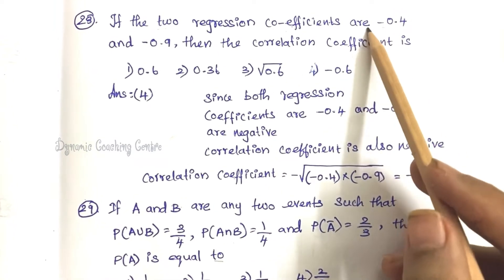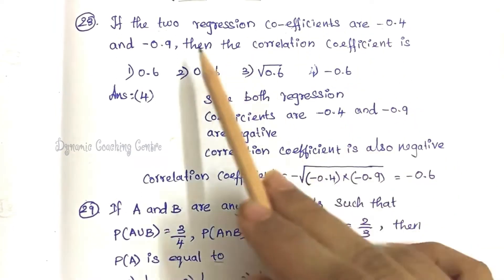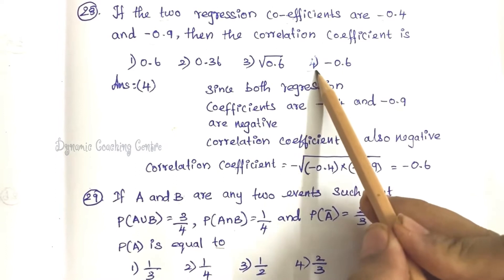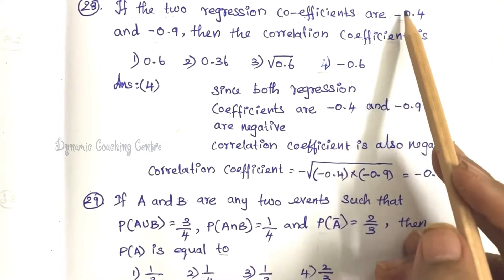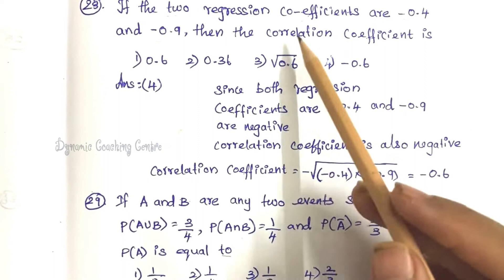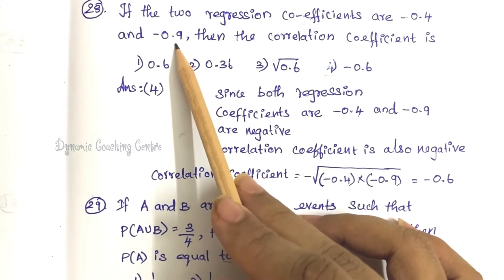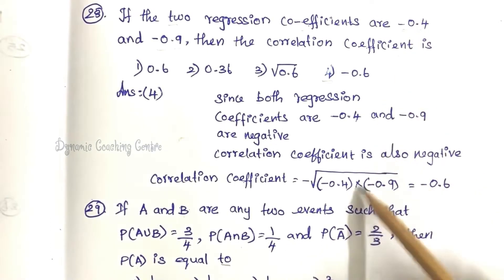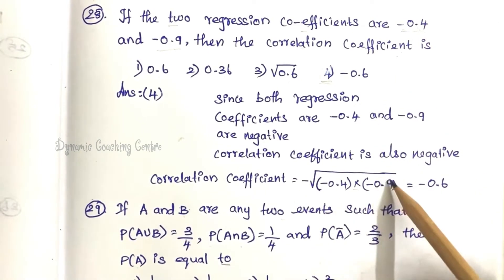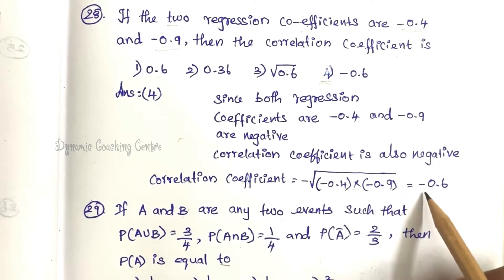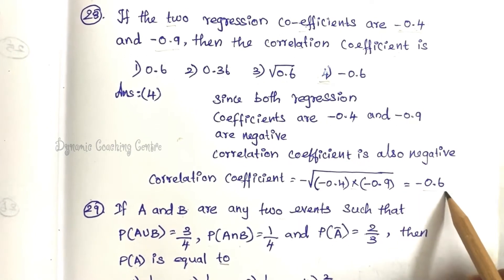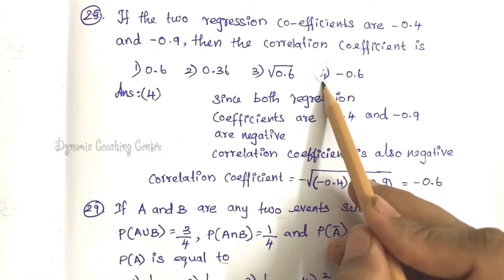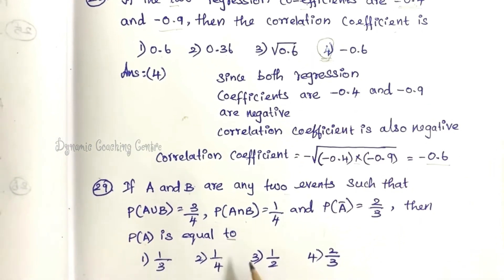This is the first question. The two regression coefficients are negative, so the correlation coefficient is also negative. Taking the product root: root of (0.4 × 0.9) = root of 0.36 = 0.6, and since both are negative, the correlation coefficient is minus 0.6. So option 4 is the correct answer.